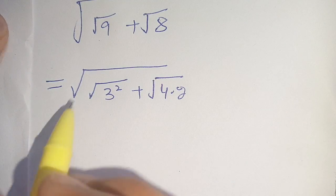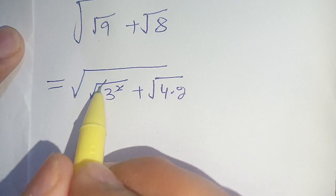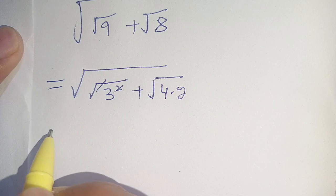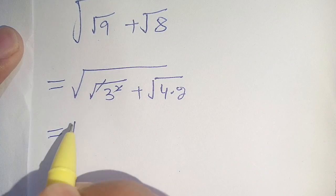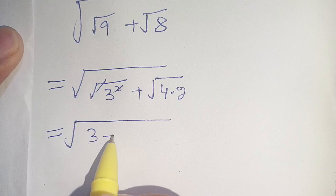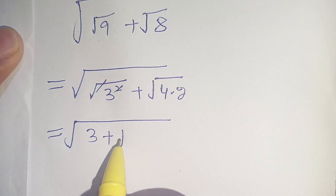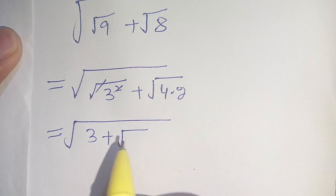In the next step, we can cancel out the square by the square root, and our remaining part is square root of 3 plus square root of 4 times 2.